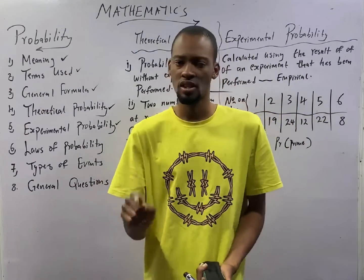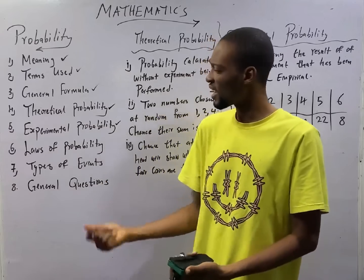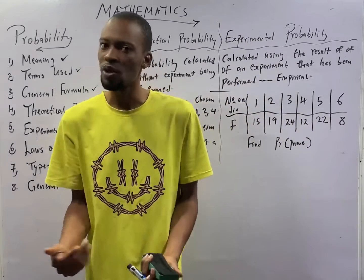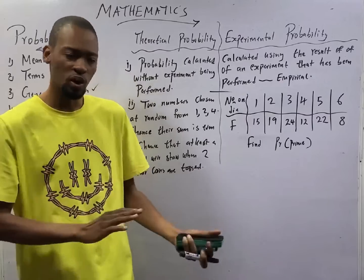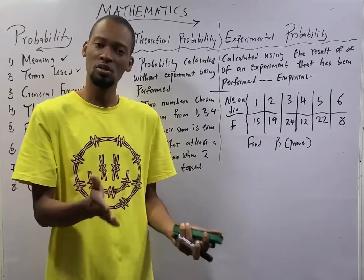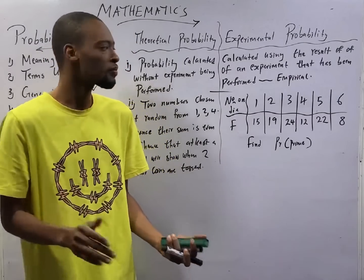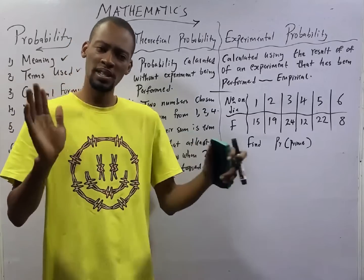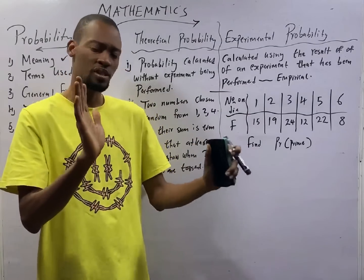For sure events, for sure events, the probability is 1. The probability that there will be 6 am tomorrow is 1 because it is sure that this is going to happen. It is constant, right? So, the probability of impossible events is 0.